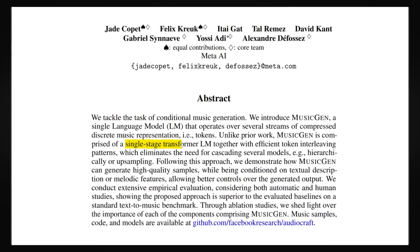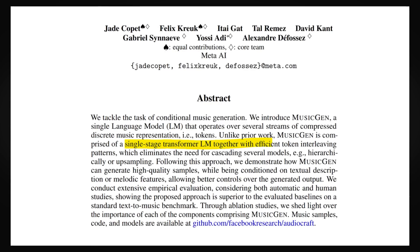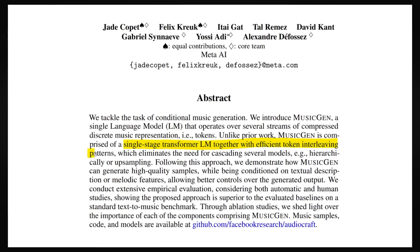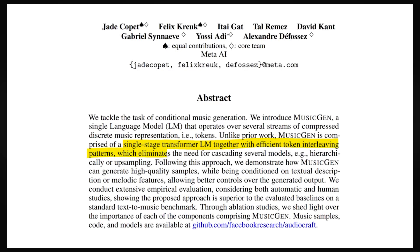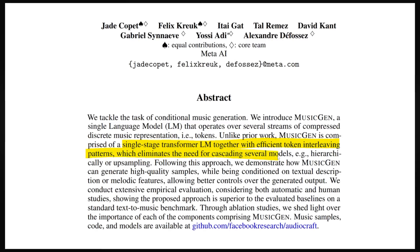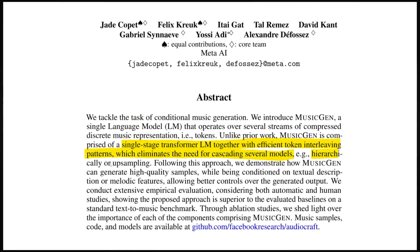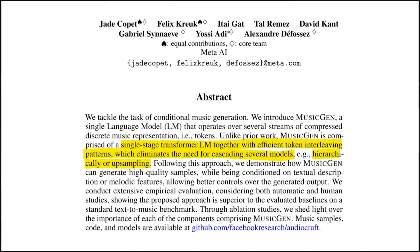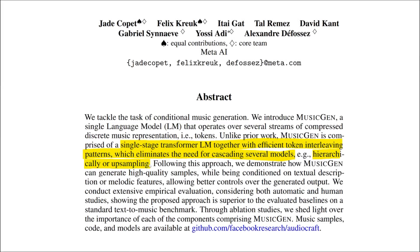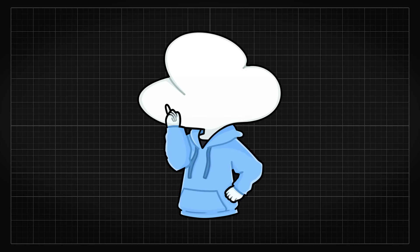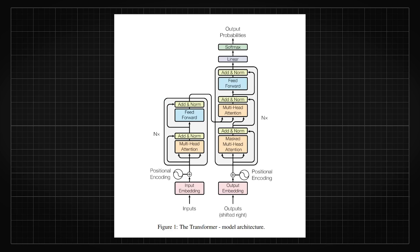MusicGen introduced a single-stage transformer language model together with an efficient token interleaving pattern, which eliminates the need for cascading several models hierarchically or upsampling. And if those sentences sound meaningless to you, it's okay — we are on the same boat. All you really need to know is that it uses transformers.